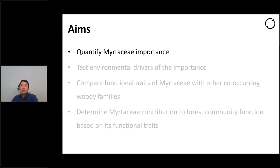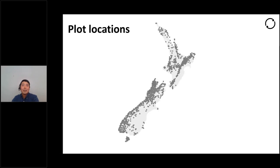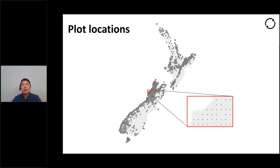Let me start with the first topic: quantification of Myrtaceae importance. For this purpose, we use vegetation inventory data collected from New Zealand national programs — the Land Use and Carbon Analysis System managed by the Ministry for the Environment, and the National Biodiversity Monitoring and Reporting System managed by the Department of Conservation. This map shows the plot locations included in our analysis. The plots are located on the intersections of an eight-kilometer grid superimposed on land, covering the forested natural ecosystems in New Zealand. The empty spaces are mostly farmlands, grasslands, or disturbed non-forested areas. We compiled species-level cover and basal area from vegetation inventory data collected from 2009 to 2014.